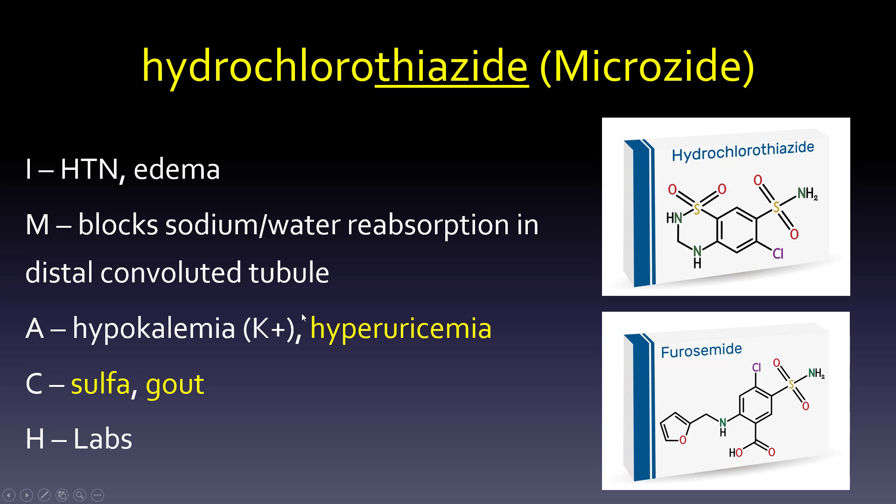Hydrochlorothiazide — moving from the Midwest to the Northeast. The key contrast is that we're treating hypertension rather than CHF. Hydrochlorothiazide is first-line for hypertension, and also for edema. The mechanism is blocking sodium and water resorption, but because we're further from the efferent and afferent arterioles, we don't cause as much diuresis. Adverse effects include hypokalemia and hyperuricemia — elevated uric acid — which is bad for gout.